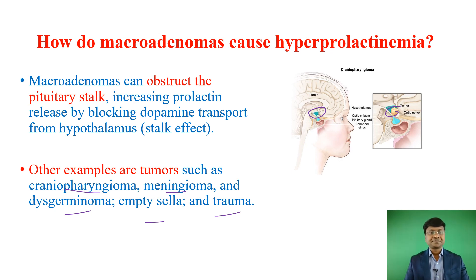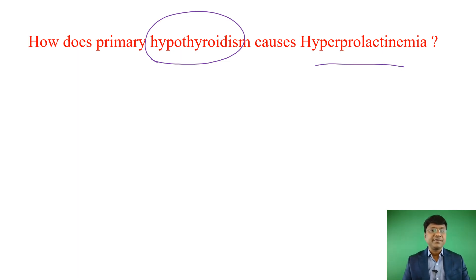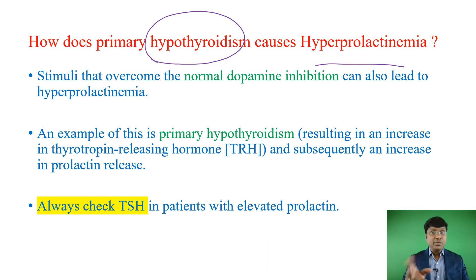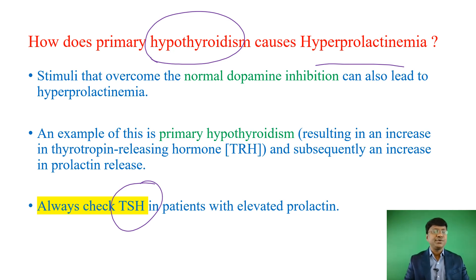How does primary hypothyroidism cause hyperprolactinemia? Whenever an individual has primary hypothyroidism, thyroid releasing hormone (TRH) from the hypothalamus is increased. This excess TRH stimulates prolactin production from the anterior pituitary, causing hyperprolactinemia. To diagnose this, you must also test for TSH — if TSH is elevated, then primary hypothyroidism is responsible for the hyperprolactinemia.